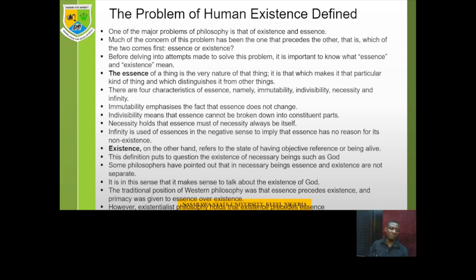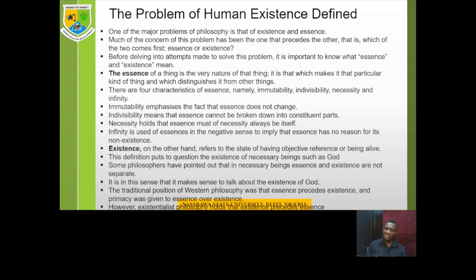When we talk about existence, we are talking about the state of having objective reference or being alive — when we can experience you, you can be considered as existing. However, if we limit existence to that, there will be a problem when we talk about the existence of God, since we do not see God and yet say God exists. Some philosophers have said that in necessary beings such as God, essence and existence are not separate — they are joined. It is in this sense that we can talk about the existence of God.